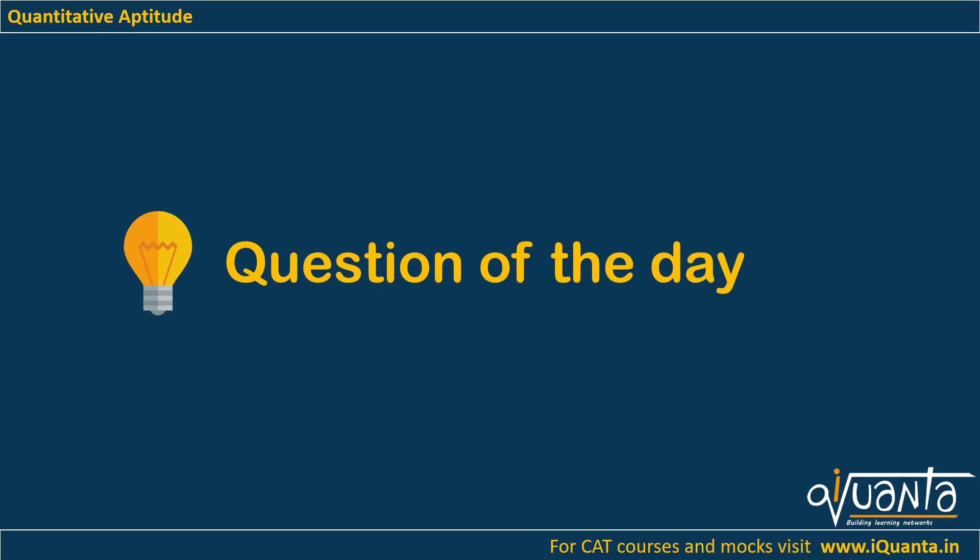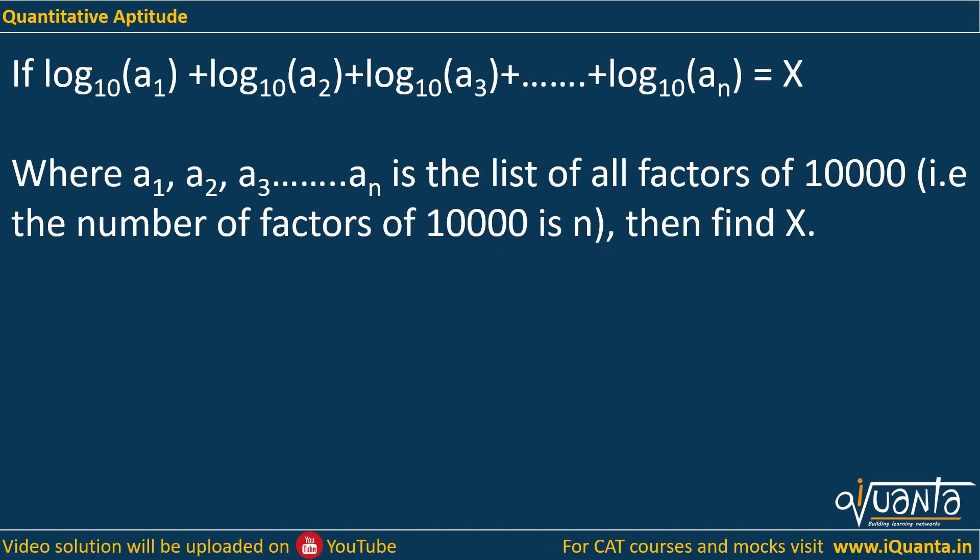Hello everyone. In today's question, we'll be using concepts of logarithms and factors from number system. The question is: if log₁₀(a₁) + log₁₀(a₂) + ... + log₁₀(aₙ) = X, where a₁, a₂, a₃, ..., aₙ is the list of all factors of 10,000 (meaning the number of factors of 10,000 is n), then find X.